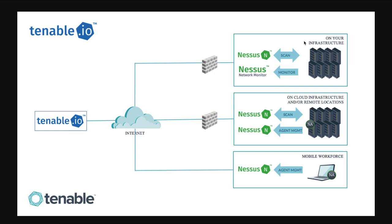When you go to deploy a scanner, you've got a couple of options. You can import the OVA into VMware using our Tenable Core appliance. We also have a Hyper-V version of that as well. You can also install on different operating systems — we support a variety, from 32-bit versions of Windows up to your latest versions of Windows Server, various Linux flavors, as well as OS X. From a hardware perspective, you're looking at four cores, eight gigs of RAM, and 50 gigs of storage space per scanner deployed.